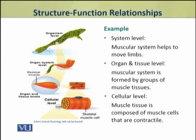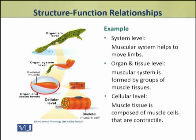The muscular system at the system level helps to move the limbs. At the organ level, we see that these muscles are made up of a group of muscle tissues. These muscles are based on the cellular level — that is, muscle tissue is made up of cells, called muscle cells, which are contractile in nature.